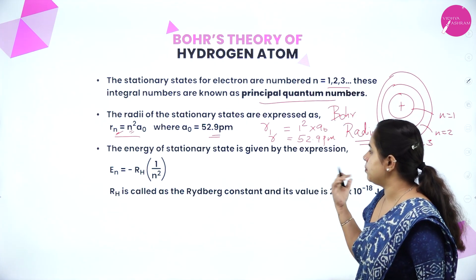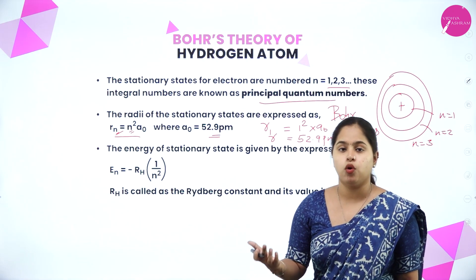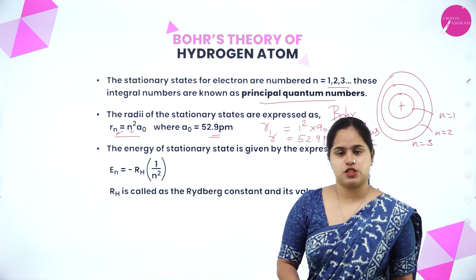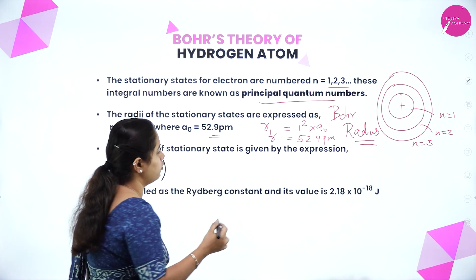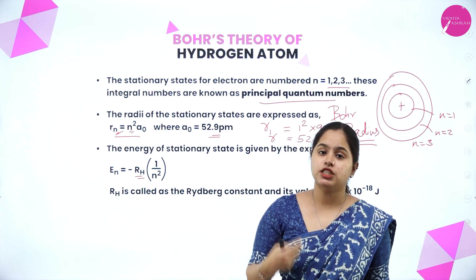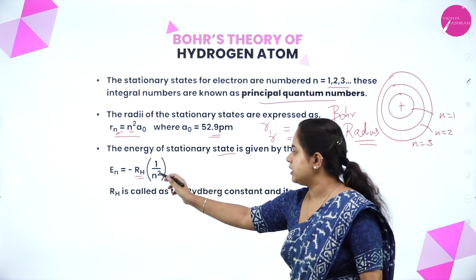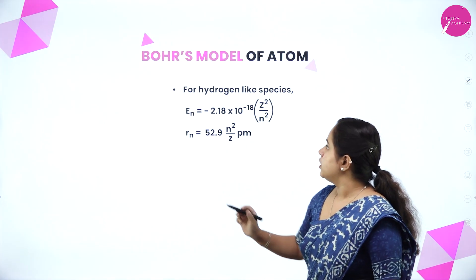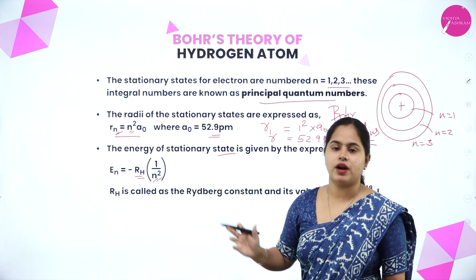Now the energy of a stationary state is given by the expression En = −RH × (1/N²), where RH is Rydberg's constant having a value of 2.18 × 10⁻¹⁸ joules. This gives the energy corresponding to the different stationary states, where N corresponds to which energy level the electron is present in. For hydrogen atom, En = −RH × (1/N²).